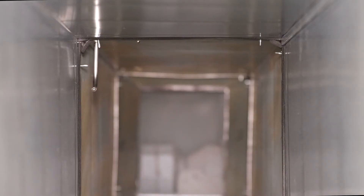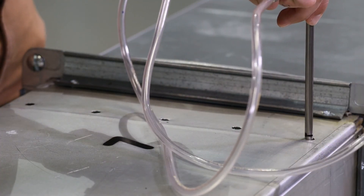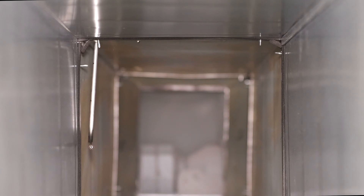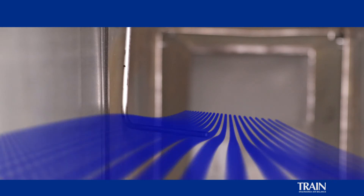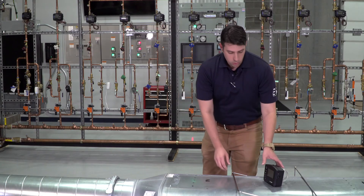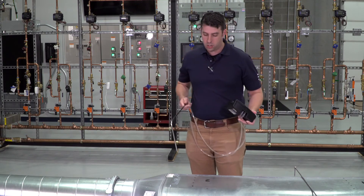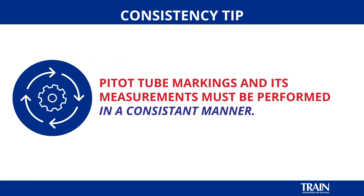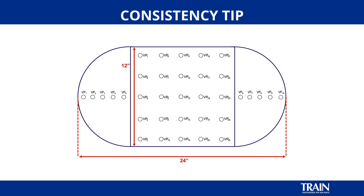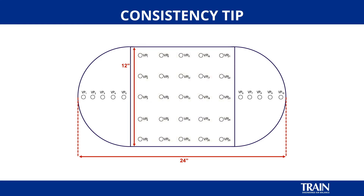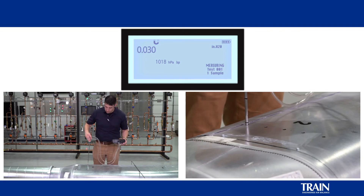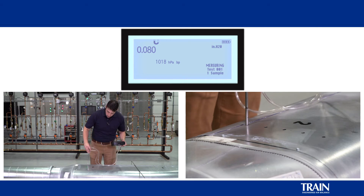Here we can visually demonstrate the location of the pitot tube inside of a duct when performing a pitot tube traverse. The pitot tube must be oriented into the airstream and perpendicular to the airstream in a cross-sectional plane. We do not want to see the pitot tube at an incorrect angle, since that will produce erroneous readings and provide unacceptable data. We will take the pitot tube and begin traversing the rectangular portion of the flat oval duct. It's also important that the pitot tube be gridded off and measurements taken in a consistent manner. For the purposes of this demonstration, we will proceed with a top-down, left-to-right grid pattern, which is recommended for consistency to produce repeatable results. Point number one, point number two, point number three, point number four, and point number five.